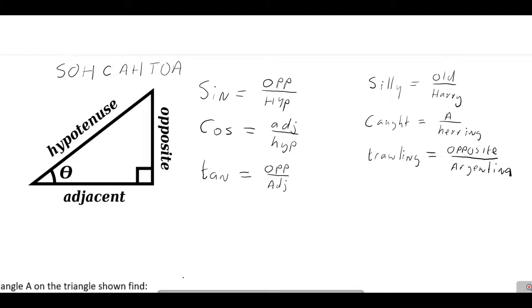So your ratios are as follows: sine is equal to opposite over hypotenuse, cosine is adjacent over hypotenuse, and tan is opposite over adjacent. The way you can remember that is with the mnemonic SOH-CAH-TOA — spelling out S-O-H-C-A-H-T-O-A — or you might use 'Silly Old Harry Caught A Herring Trawling Off Argentina', or any other rhyme you can use to remember.